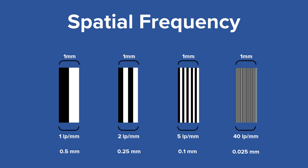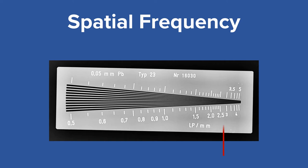What's the smallest line pair you can see? I can see about 2.75 line pairs per millimeter. Unfortunately, with this image, I can't see all the way down to five line pairs per millimeter.